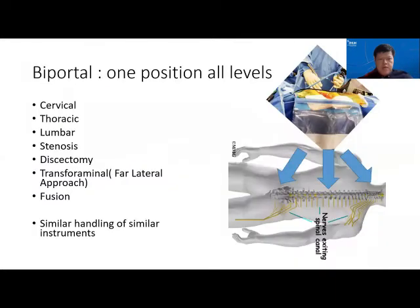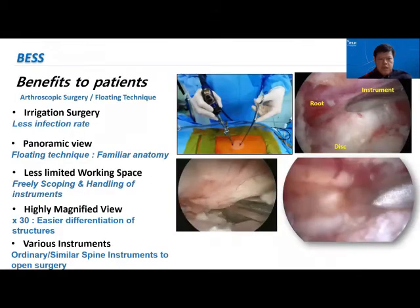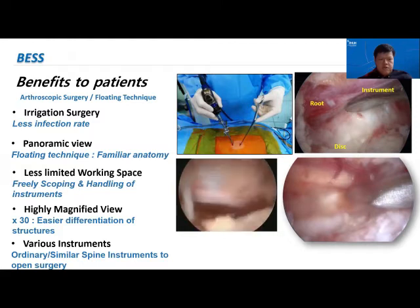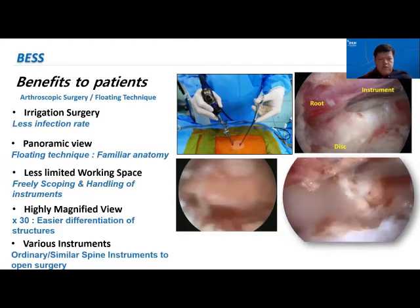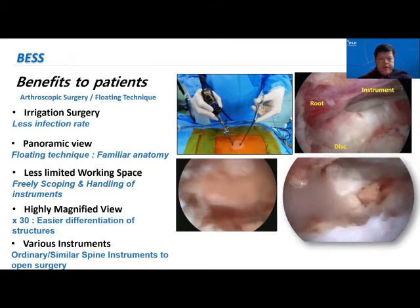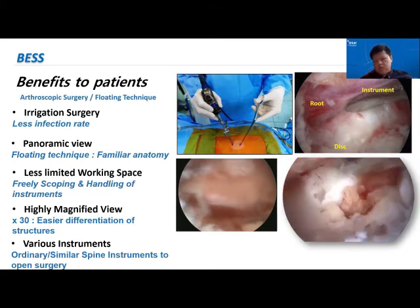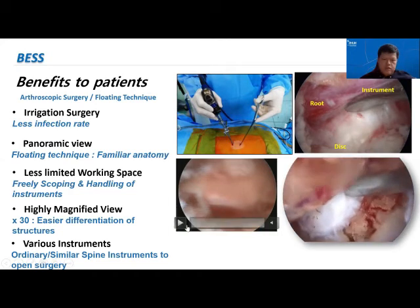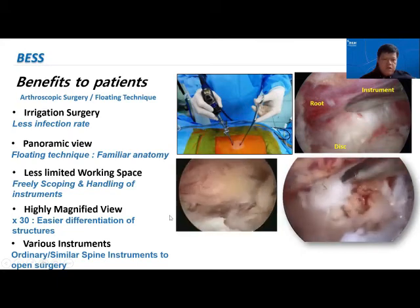The good thing about biportal surgery is that we can use the same position and apply it to all levels of spine, from cervical to lumbar, and perform decompression, discectomy, as well as fusion across all levels using a similar position — the non-dominant hand holding the scope and the dominant hand holding the working instrument at two separate ports. Benefits include less invasiveness, less pain, less bleeding, and irrigation surgery limiting infection rate.